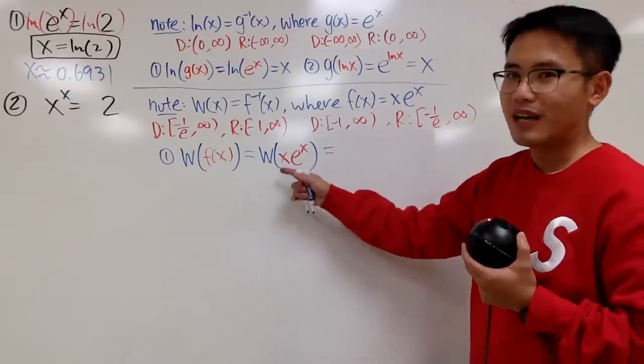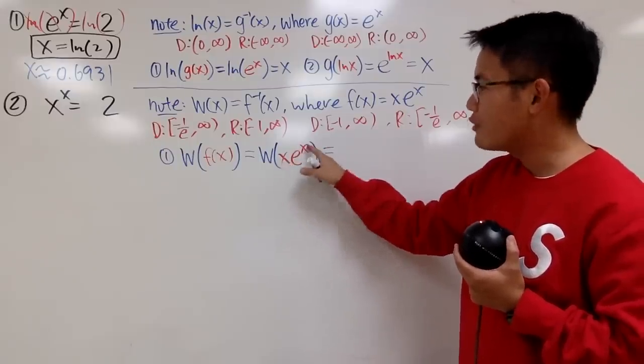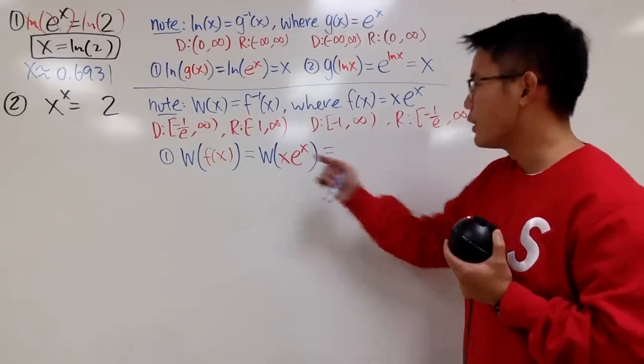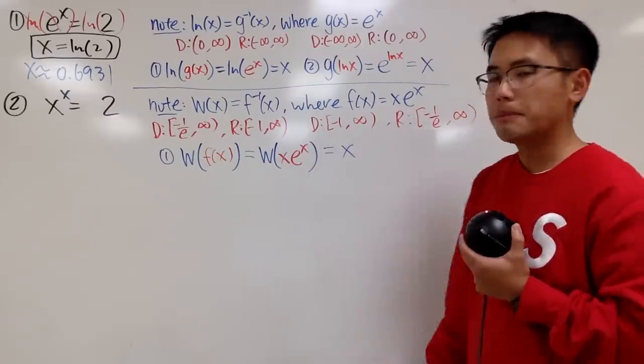Now, pay attention to this expression, because we'll be using this a lot, and the idea is, if you have an expression in the form of x and x, and they have to be the same. Of course, you can have something more complicated, but they have to be the same. And the base right here has to be e.